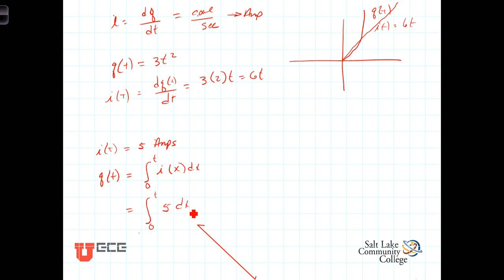which then equals 5x evaluated from 0 to t, which would then equal 5 times t.